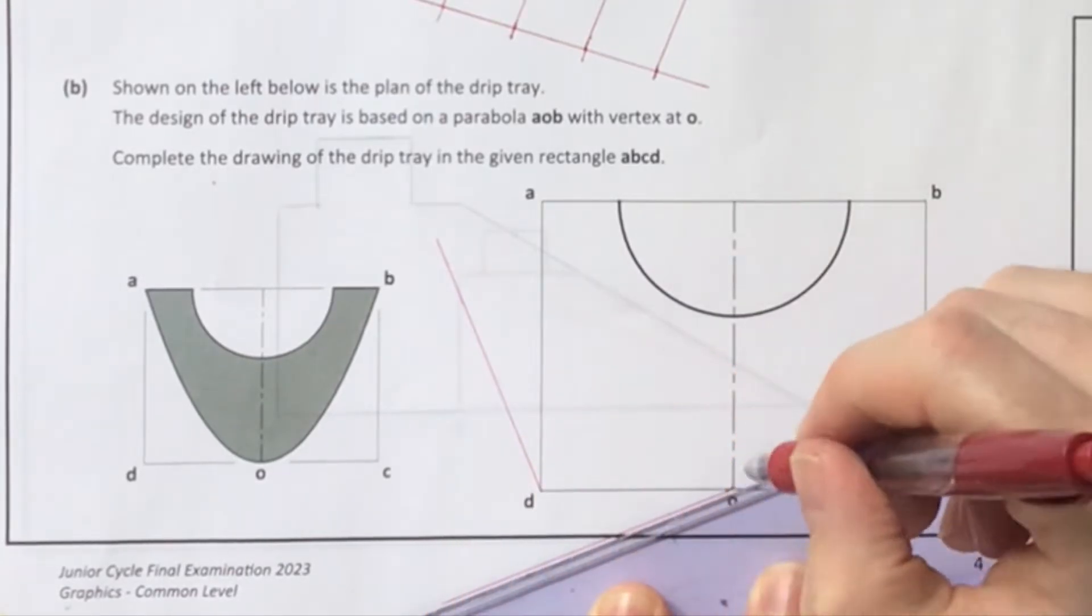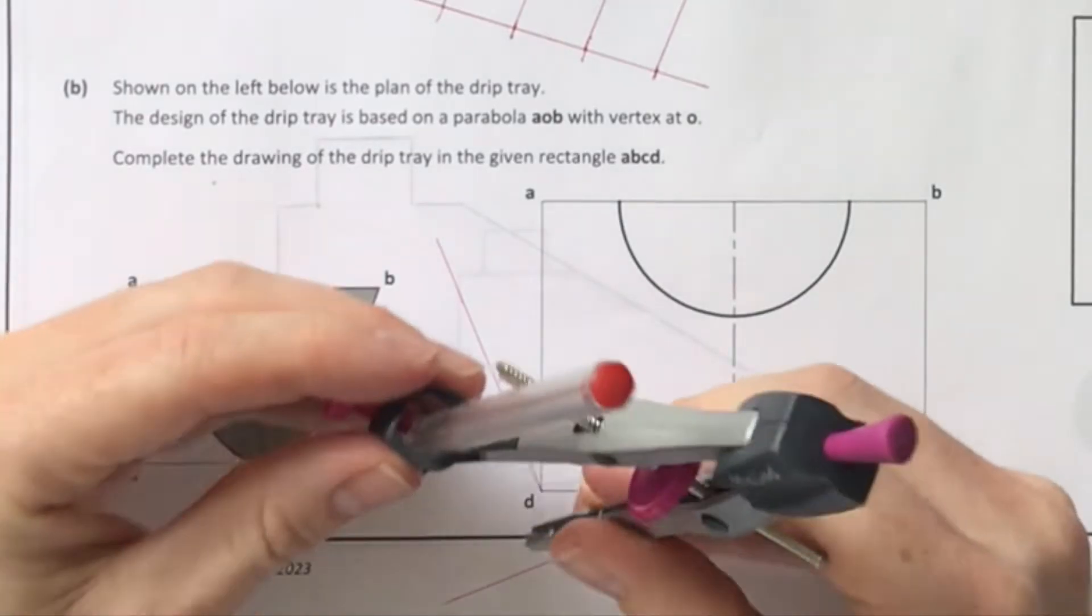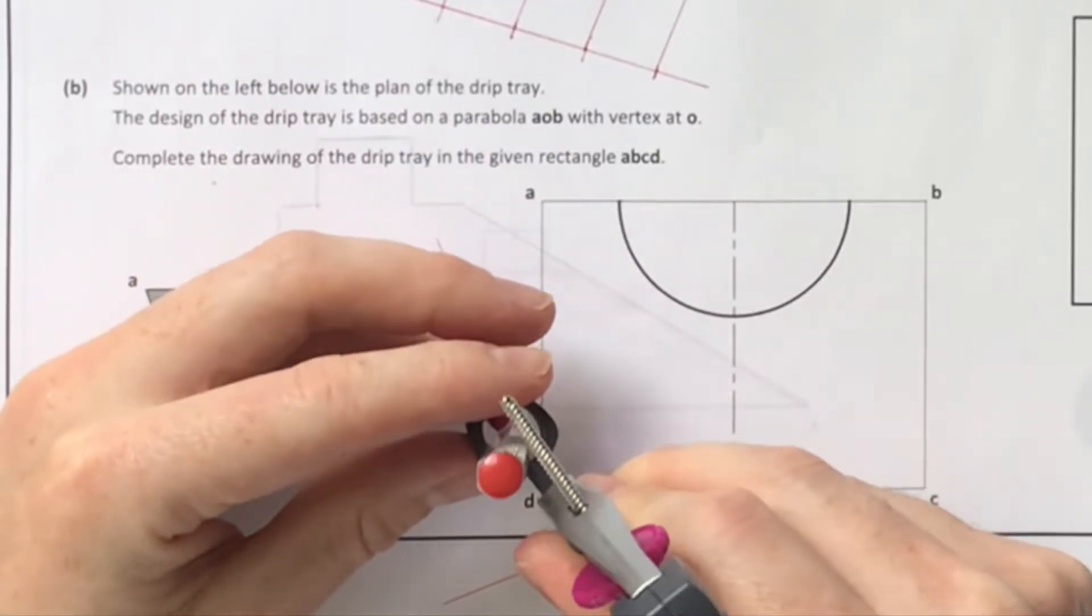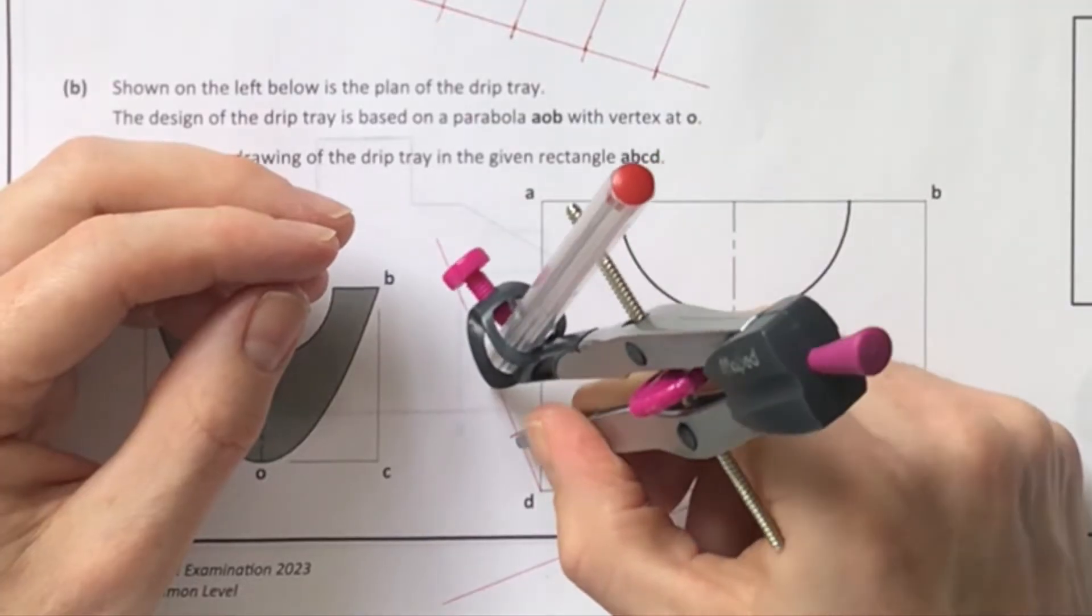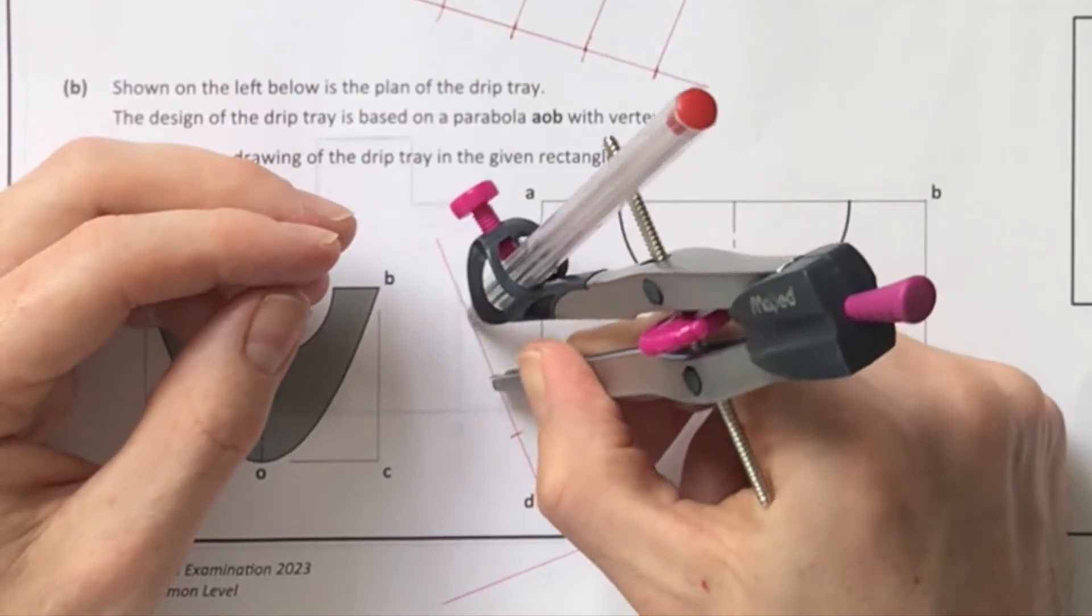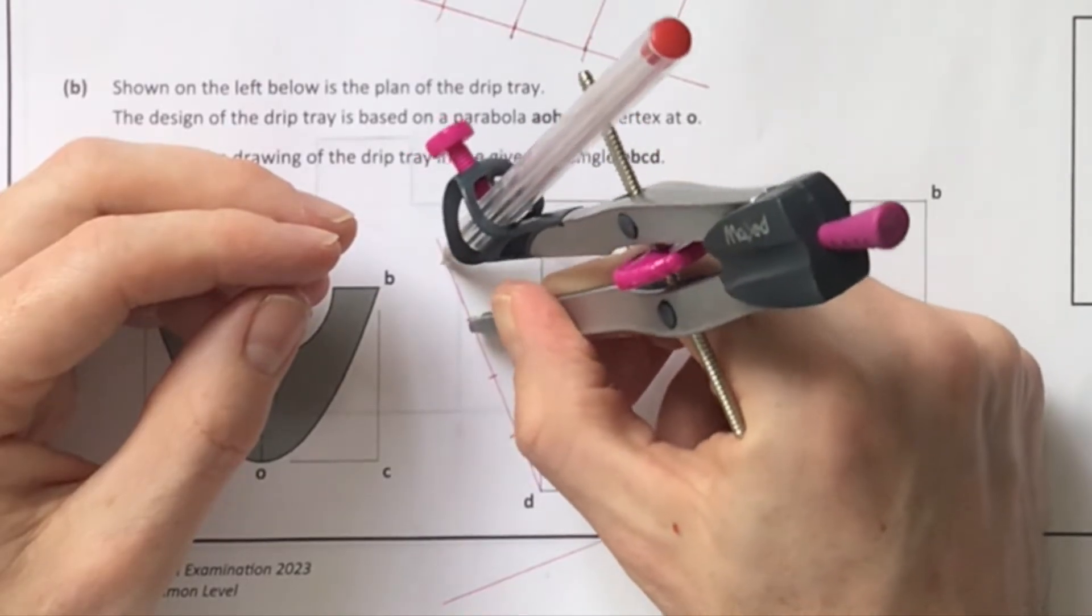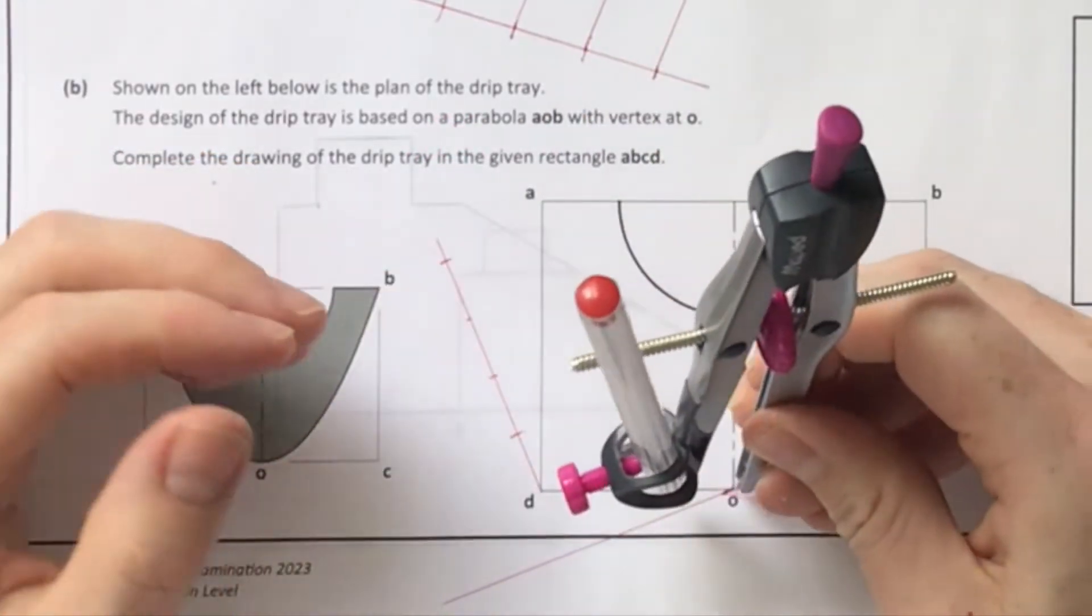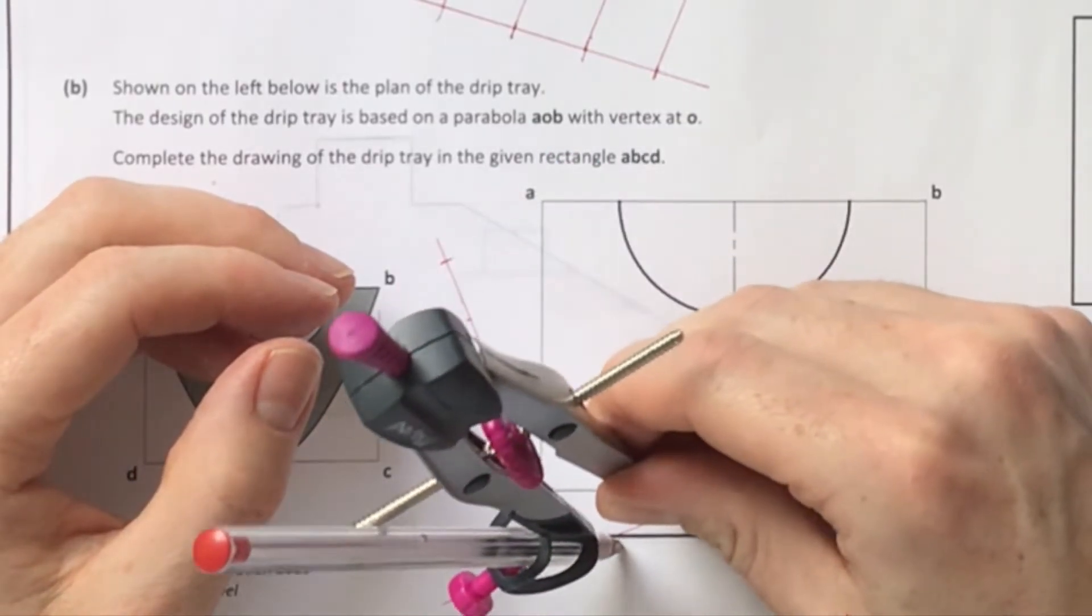I always find it easiest to do four points for this rectangular method of drawing a parabola. So I'm going to divide each length, AD and OD, into four equal lengths. Take my compass, keeping that same length, step it off four equal times, then join the last one back to the point you haven't gone from.